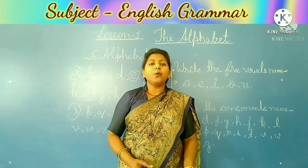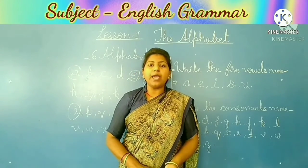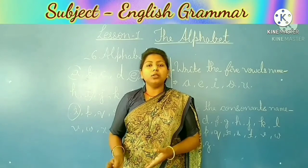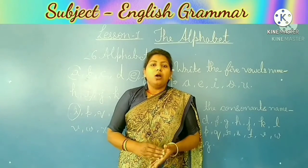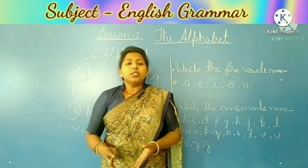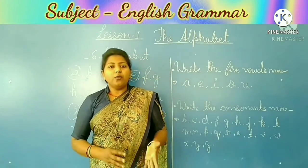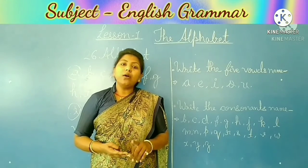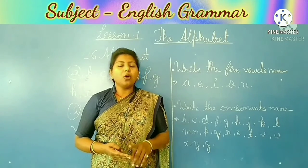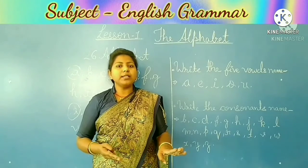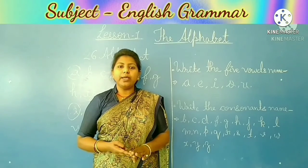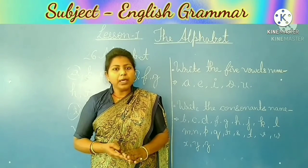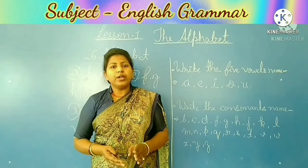Okay children, I hope aapko alphabet acche se samajh mein aaya ho. Alphabet means hota hai A to Z. Vowels means A, E, I, O, U — these are your vowels. And consonants — jitna aapka bach jaata hai in paanchon ko hatane ke baad, woh saare consonants hote hain.